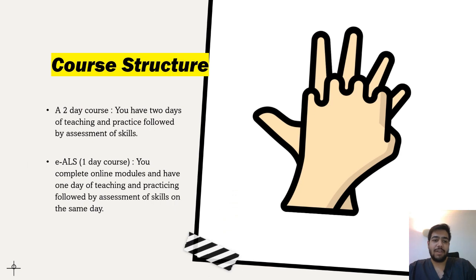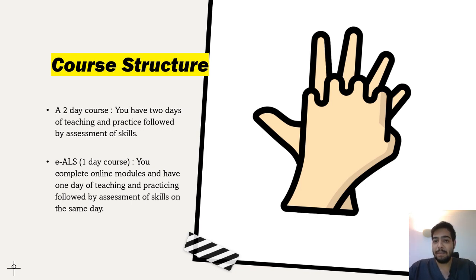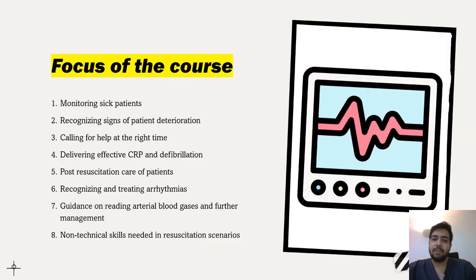In terms of course structure, ALS can be a two-day course with two days of teaching and practice followed by a skills assessment, after which you receive the certificate. Alternatively, there is a one-day course where you complete online modules first and then have one day of teaching, practice, and assessment — and if you pass, you receive the ALS certificate.